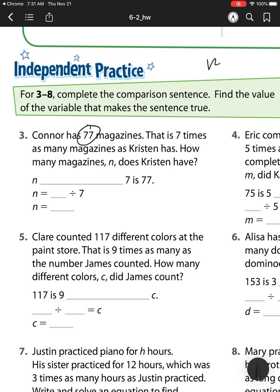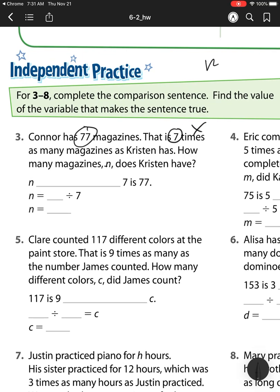So we have Connor has 77 magazines. That is seven times as many magazines as Kristen has. How many magazines n does Kristen have? Well, n's our mystery number, so that's what we're looking for. That's our variable. So we know this is a times as many problem because it says she has times as many as.